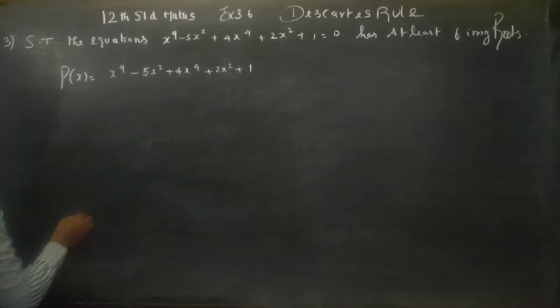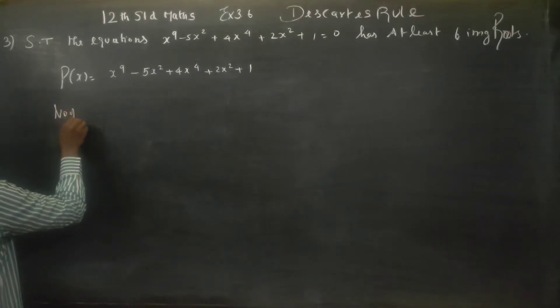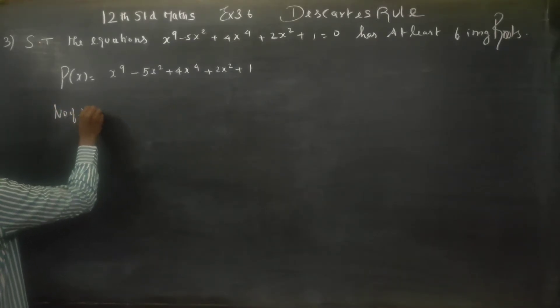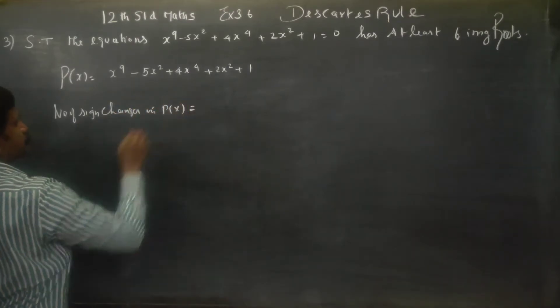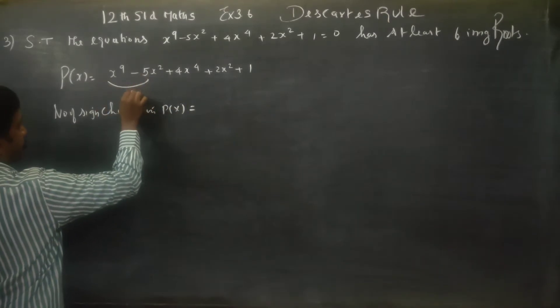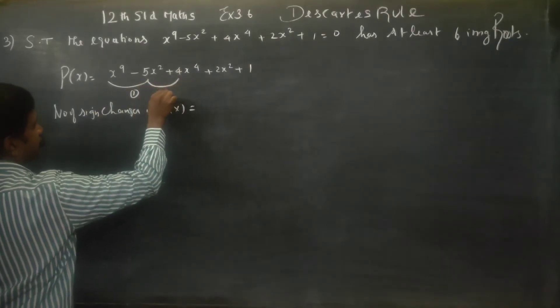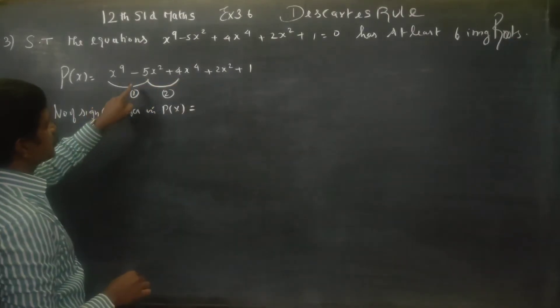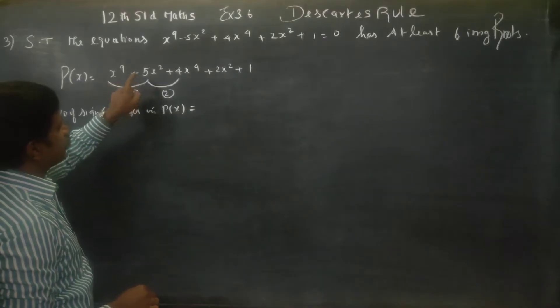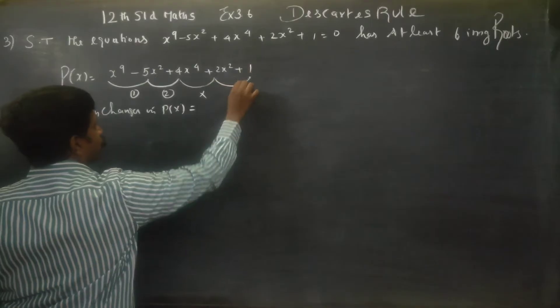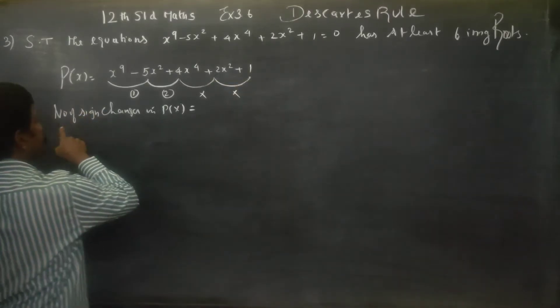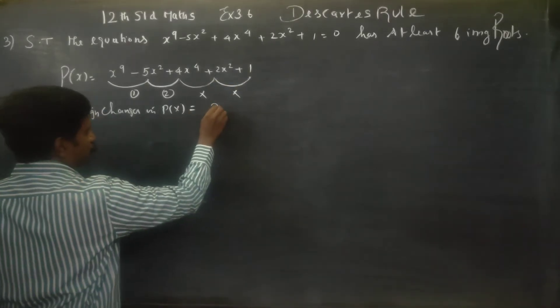I will count number of sign changes in P of x. One, two changes. Positive to negative, negative to positive, two changes. Positive, positive, no change. Positive to positive, no change. Therefore, number of sign changes in P of x is 2.